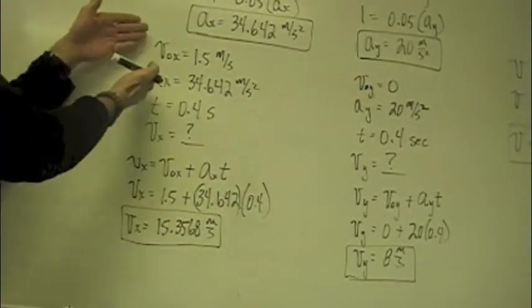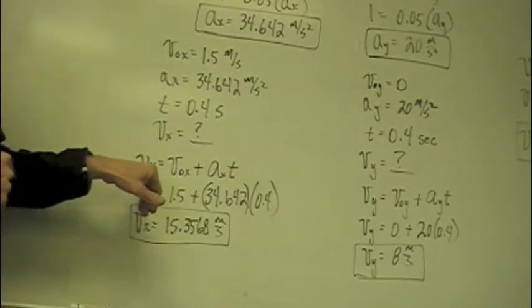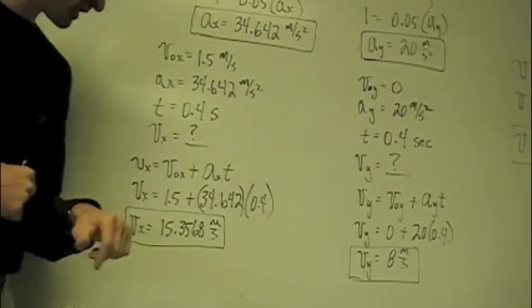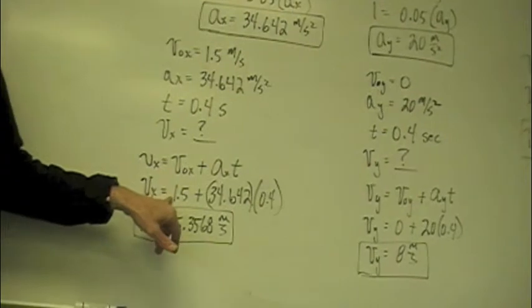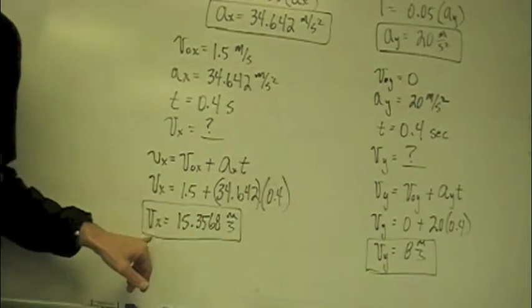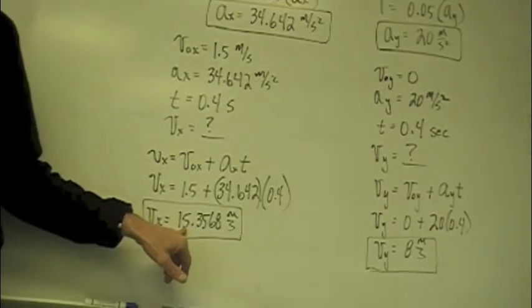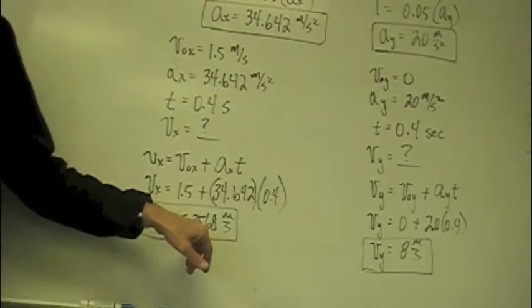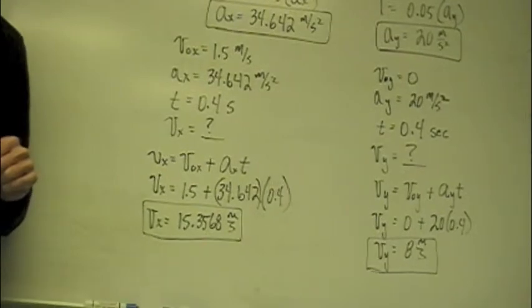So, when we plug these in you'll notice we get vx equals v dot x plus ax t. We have an initial velocity in the x direction and we come up with a velocity in the x direction of 15.3567 meters per second.